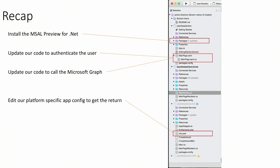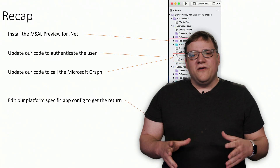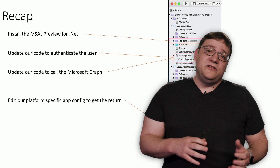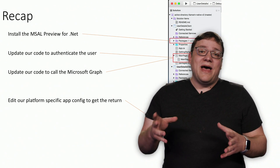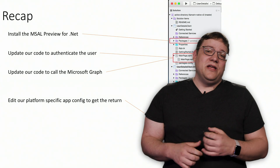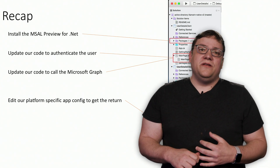Just to recap what we've done — three things that were very easy to do. First, we installed the MSAL preview for .NET. We updated our code inside the Xamarin application to authenticate the user, and added a method to call the Microsoft Graph using the 'me' endpoint to get information about the current logged-in user. The last thing we needed to do was go into each individual platform and configure their reply URI — what they listen to when the system browser comes back to the application SDK so the user can continue to authenticate.